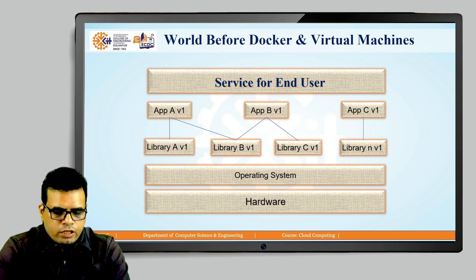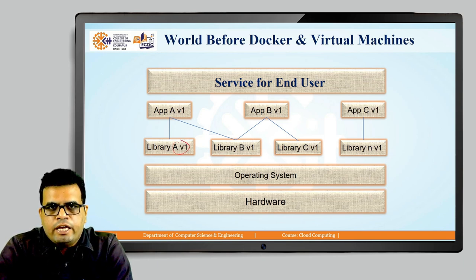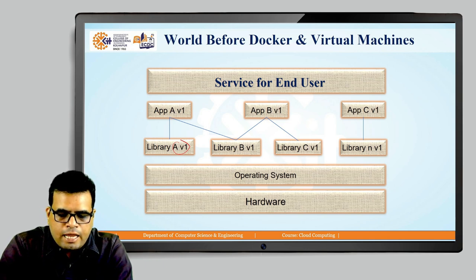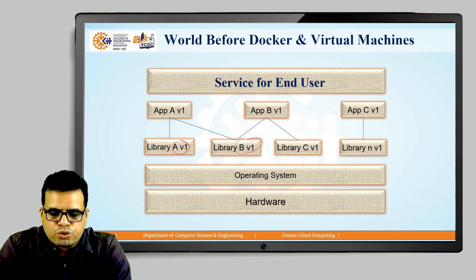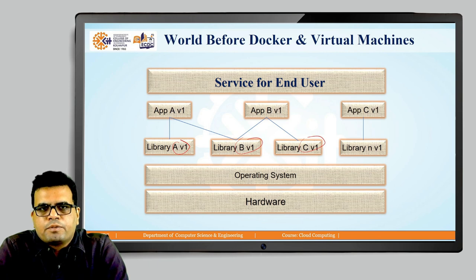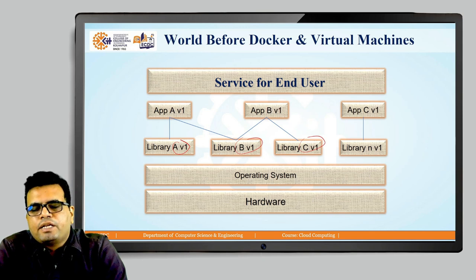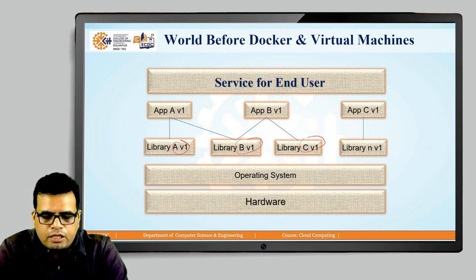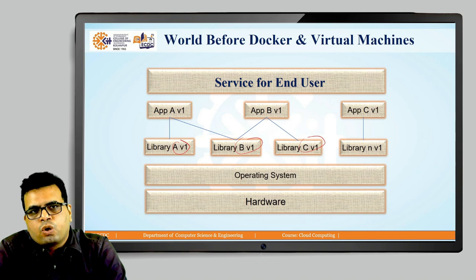Layer 3 shows the different libraries required by these applications. Library A1 is used by Application A; Library B is used by both Application A and Application B; Library C is used by Application B. Application C uses its own set of libraries. This is a standard deployment environment — we deploy packages, libraries, and required software on top of the operating system, and the applications get services from these libraries to serve the end user. All libraries must be managed on the operating system on which the applications are running.